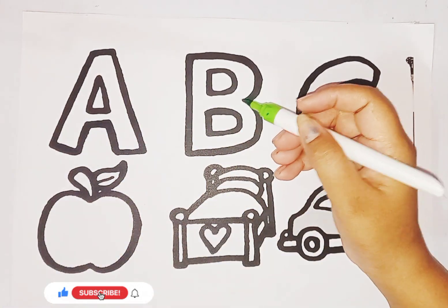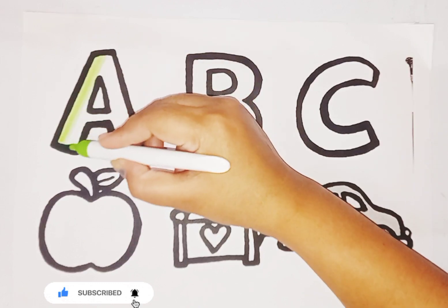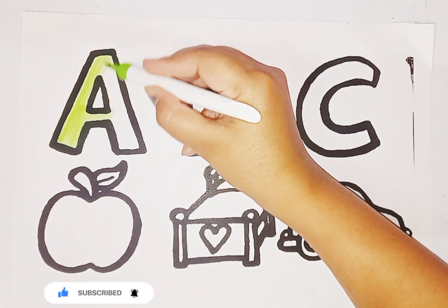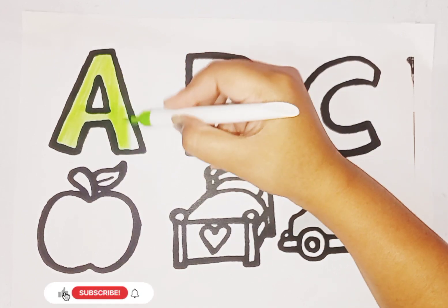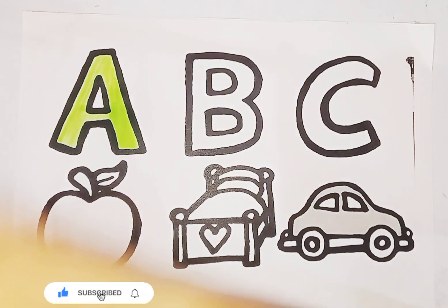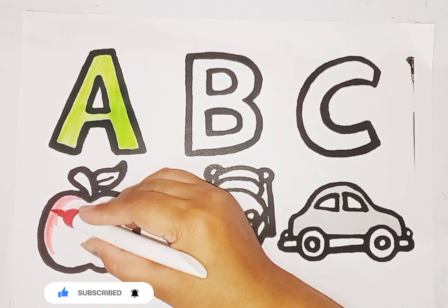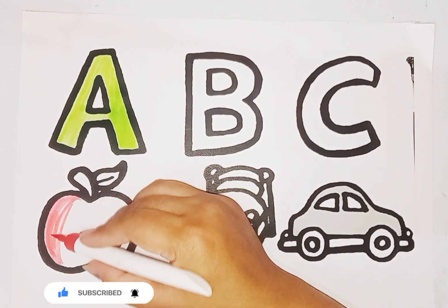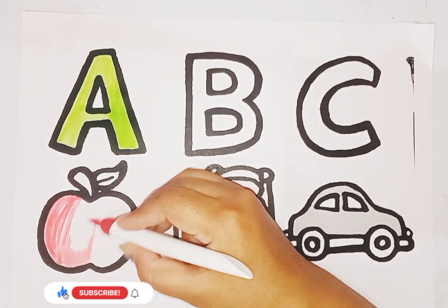Light green color, alphabet A. A is for apple. A is for aunt. Alphabet A, sound is A. Apple color is red. This is apple. Yummy, yummy apple.